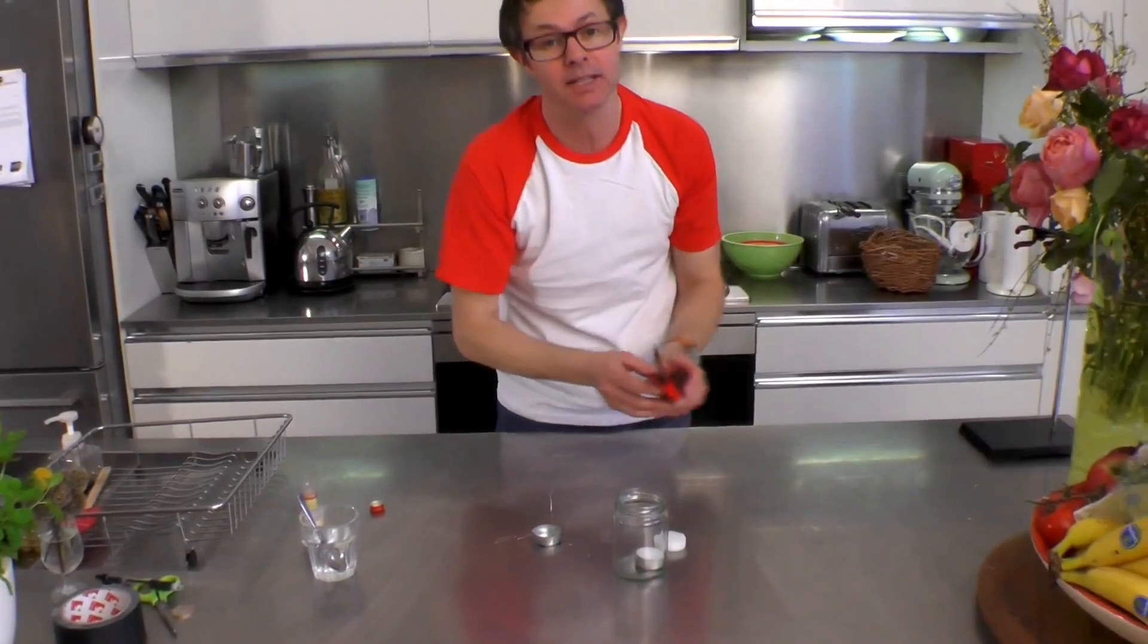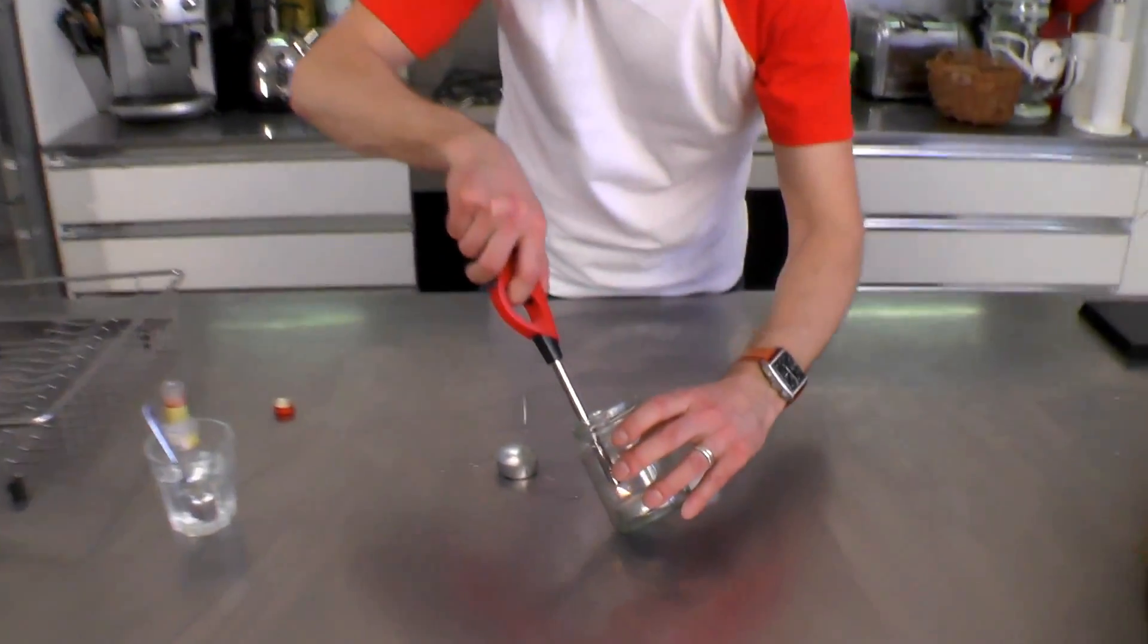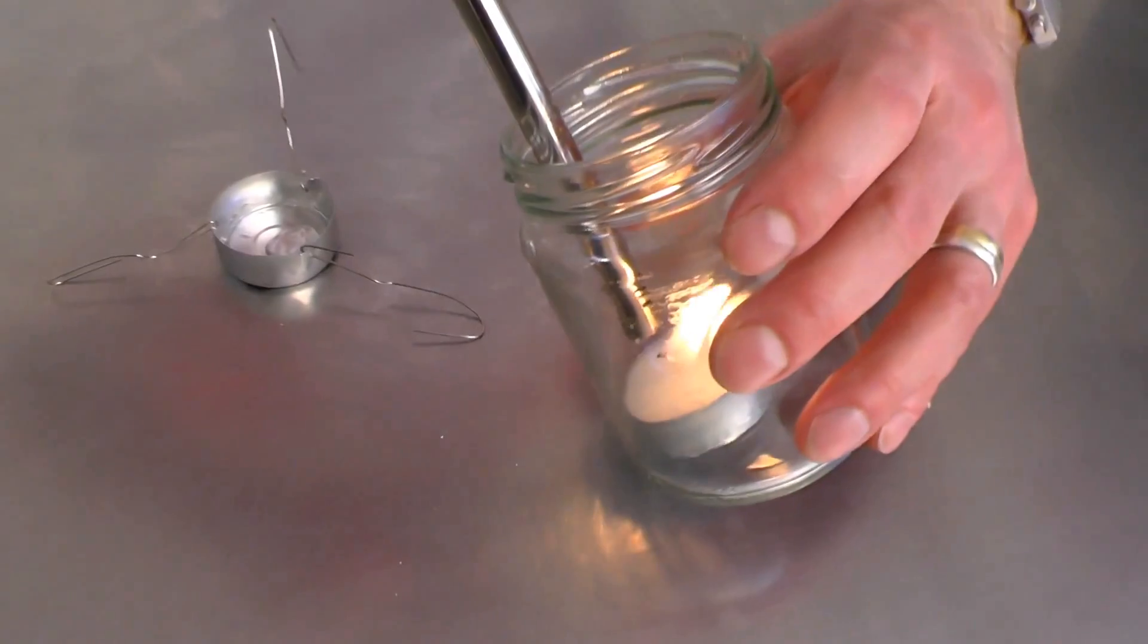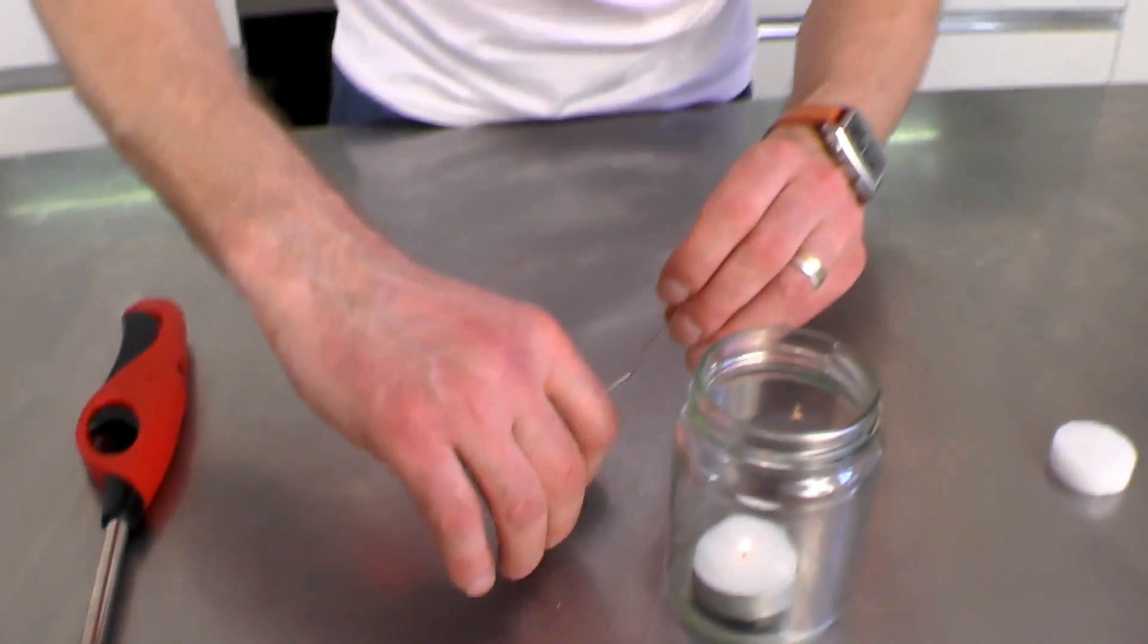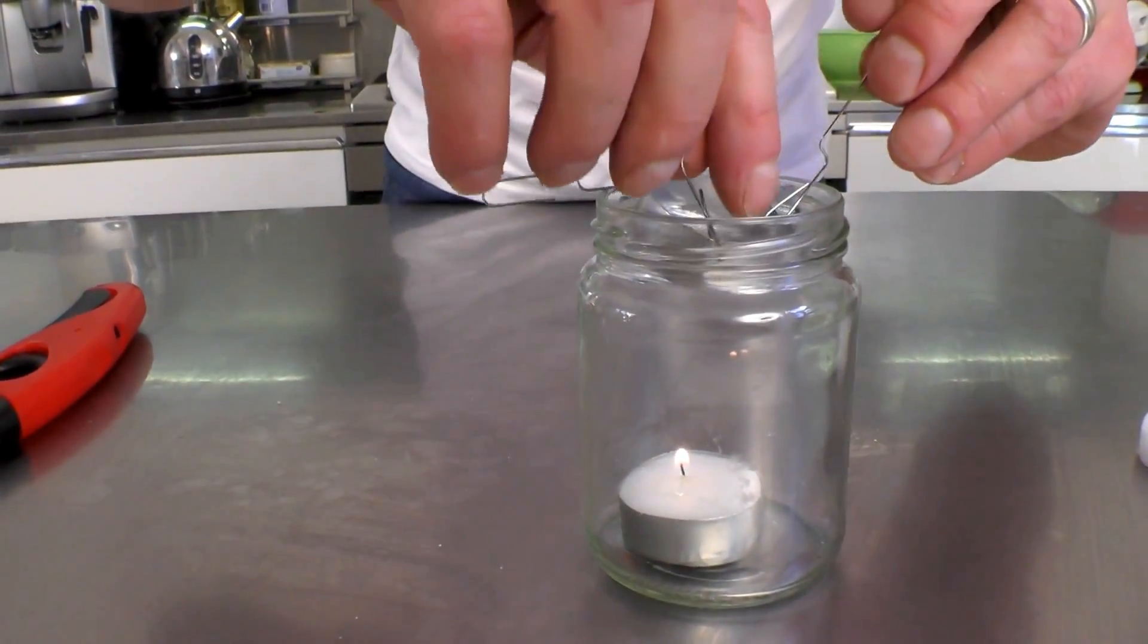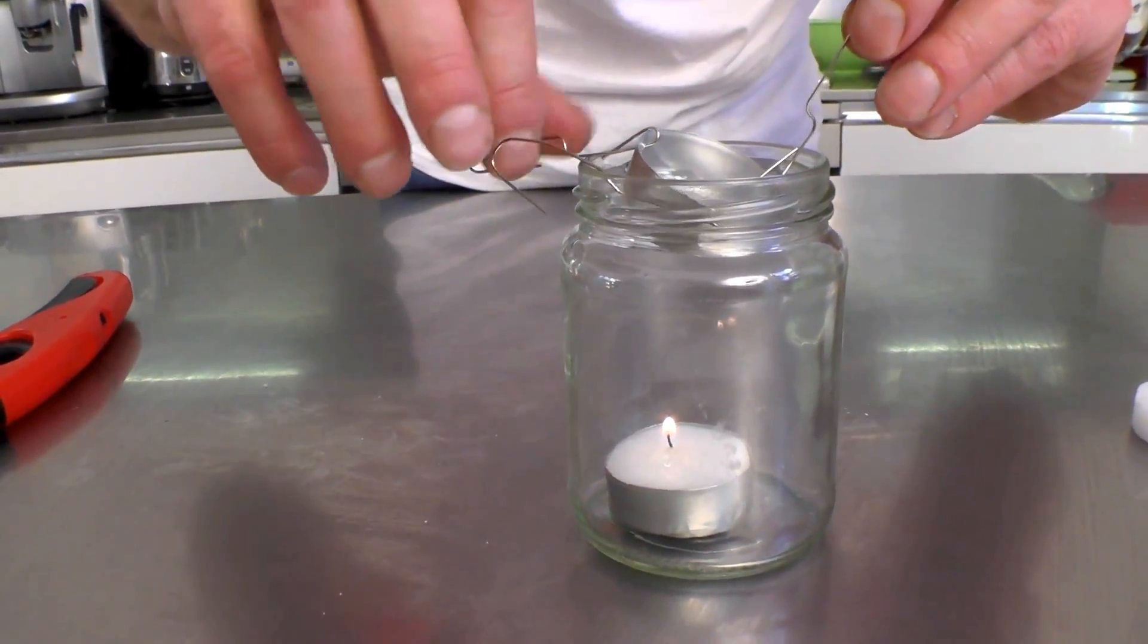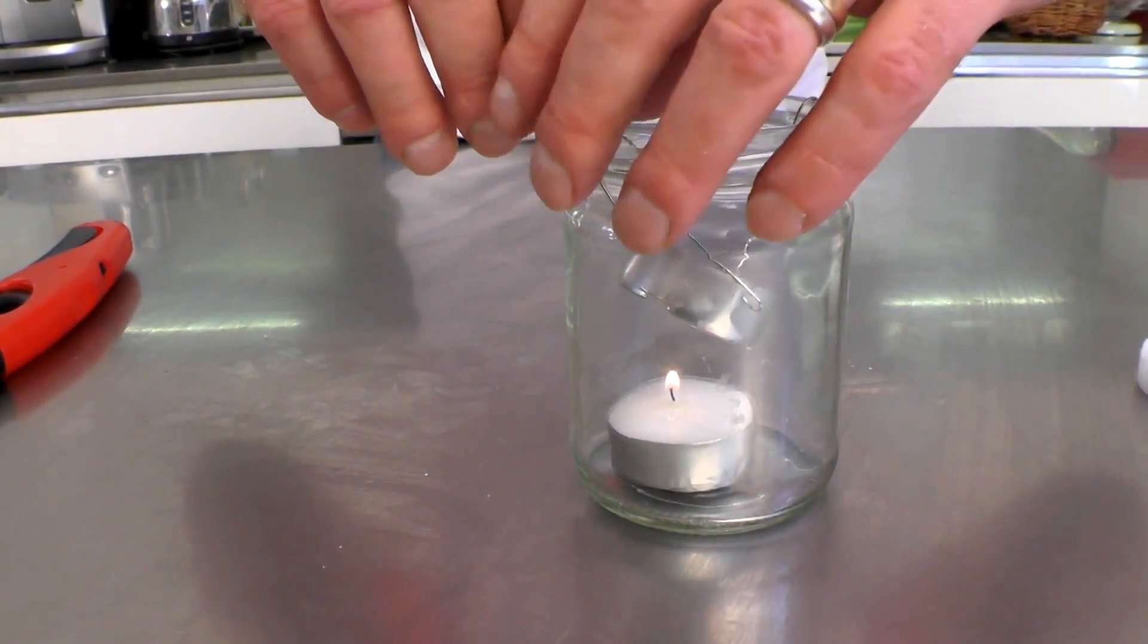Okay, so you've got a little mixture there of glycerin and water. And what's going to happen is we're going to heat that up by lighting the candle down here, and that will heat up the mixture of glycerin and water so that eventually it will start to make a little bit of smoke.